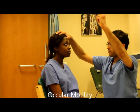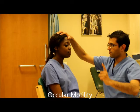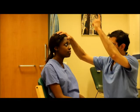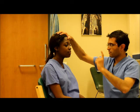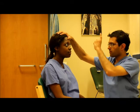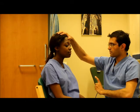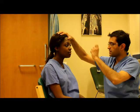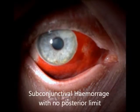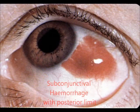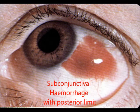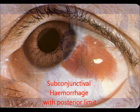Ocular motility is then examined, looking for even movement of both eyes in all directions. Restriction of eye movement may be a sign of an orbital floor fracture. A subconjunctival haemorrhage with no posterior limit is in keeping with a zygomatic complex fracture. However, a subconjunctival haemorrhage with a posterior limit may be a sign of a penetrating eye injury.